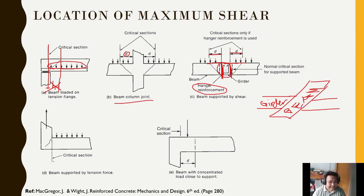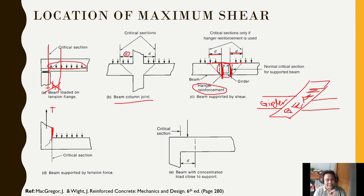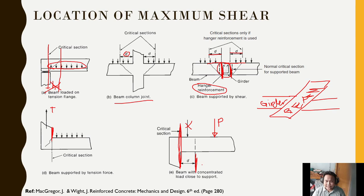For a girder with hanger reinforcement supporting a beam: the beam load hangs from below, producing tension rather than compression at the end region. Condition 1 is not satisfied — no arc action compression — so we cannot offset by D. The critical section is taken at the face of the support.